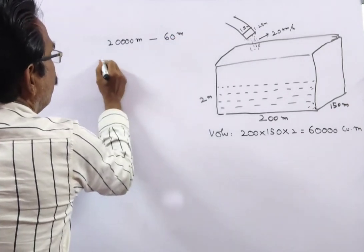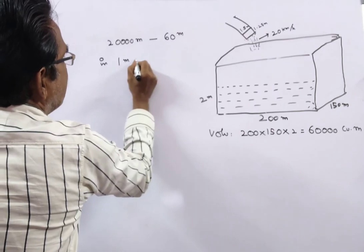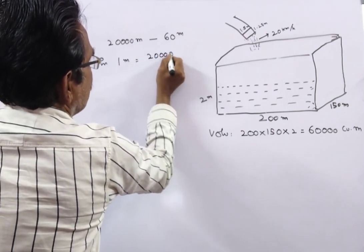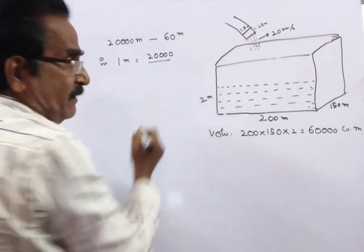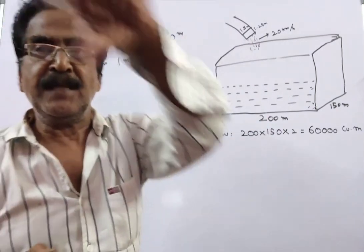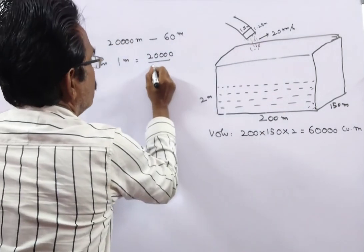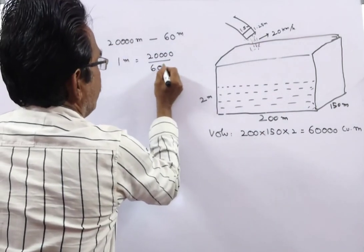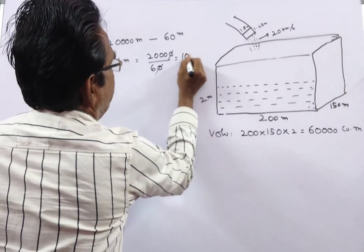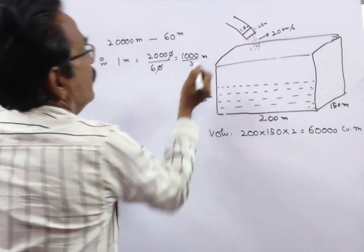So in 1 minute, what is the length of the water released by this pipe? 20,000 divided by 60, that is equal to 1000/3 meters.